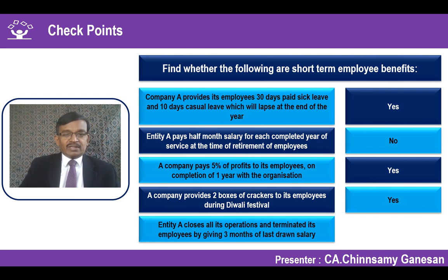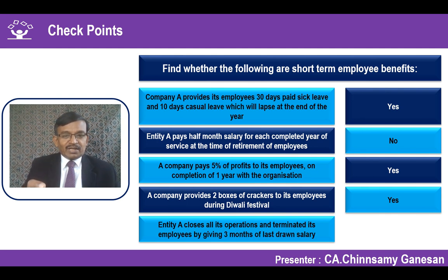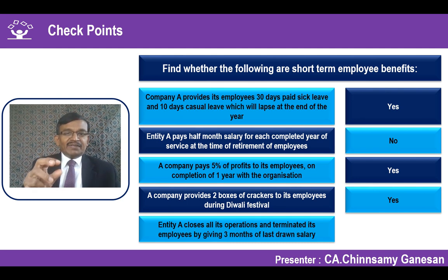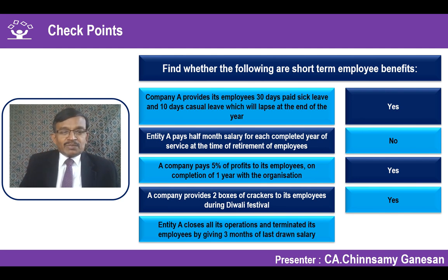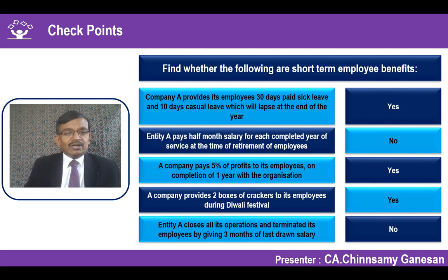An entity closes its operations and terminates employees, giving three months' salary on the date of termination — paid immediately, within 12 months from the end of the reporting period. By definition this seems like a short-term benefit, but the standard specifies that anything relating to termination of employees is not considered a short-term benefit, even if settled within the short term. It will be accounted for as part of termination benefits.